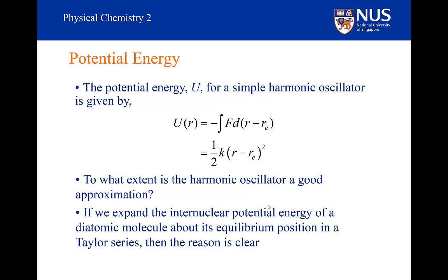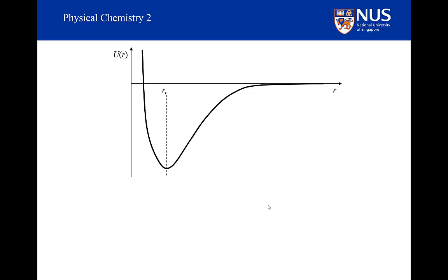What we are going to do now is expand the potential energy for a diatomic molecule in terms of what is known as a Taylor series — describing the potential energy as a polynomial. Remember, you can fit any function with a polynomial, and that is literally all the Taylor series is: fitting the potential energy with a polynomial around the equilibrium position. The potential energy has a minimum at the equilibrium position, and if we plot the quadratic function of the harmonic oscillator on top, we can see that very close to the equilibrium bond length it fits quite well.